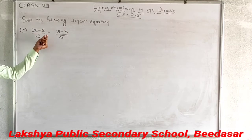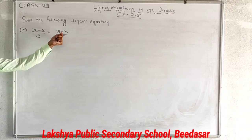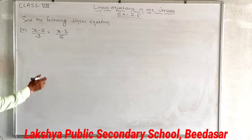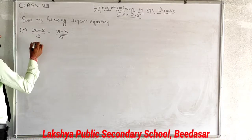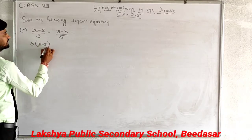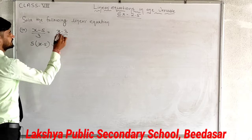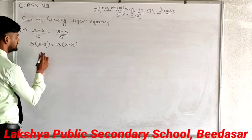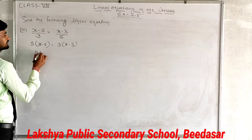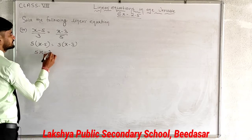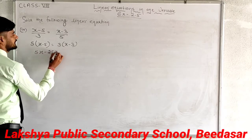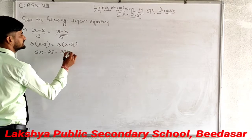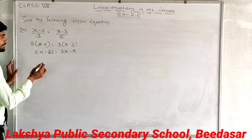Next question: x minus 5 upon 3 is equal to x minus 3 upon 5. Since denominators are 1 on each side, cross multiply: 5 multiplied by (x minus 5) and 3 multiplied by (x minus 3). This gives 5x minus 25, and 3x minus 9.